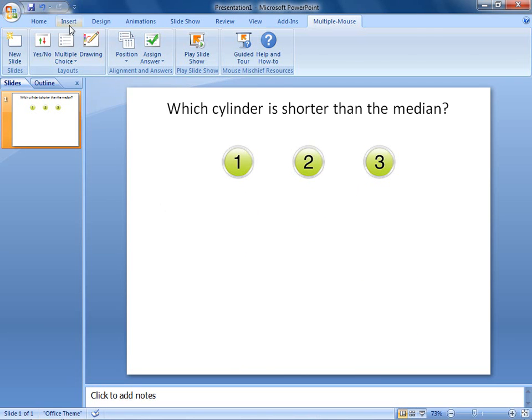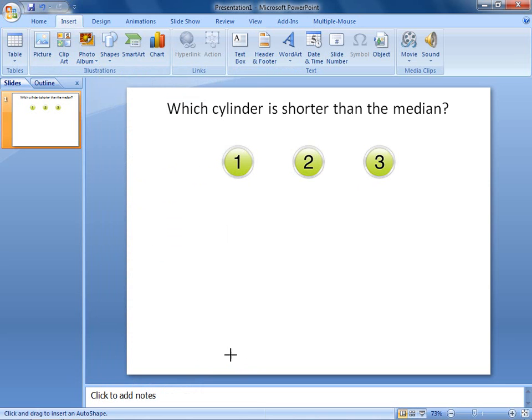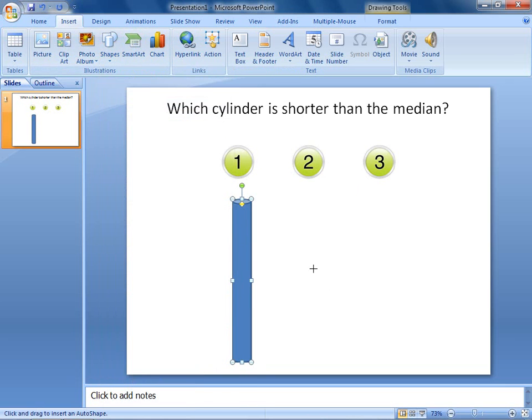I'll click the Insert tab and then click Shapes, then select a can. Now I'll click and drag to draw a tall, thin can for number one, and repeat this step to add a shorter can for two and a medium-sized can for three.